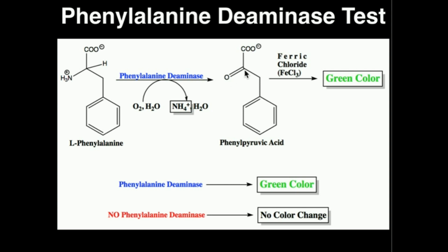How do we specifically detect the enzyme? We add something called ferric chloride. The iron of the ferric chloride is going to react with phenylpyruvic acid, which is normally colorless. When the reaction with ferric chloride occurs, this molecule is transformed into a molecule that is green.